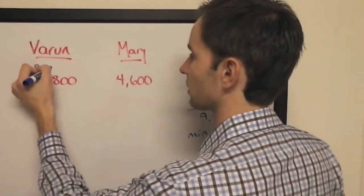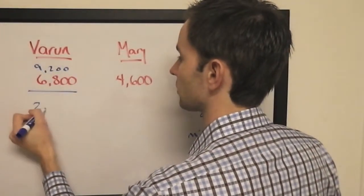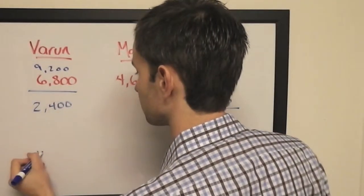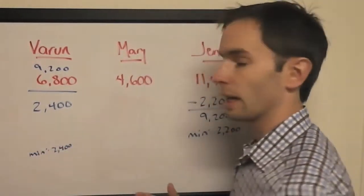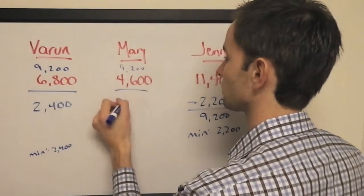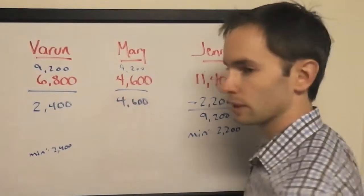Varun at $9,200 will need to wager at least $2,400. That's his minimum. And Mary will have to double up.